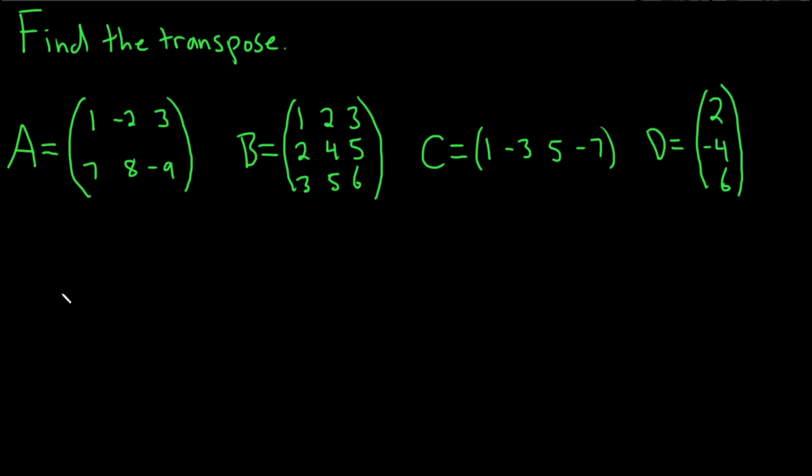So here we have A, now we're going to find the transpose, which I'll denote by A to the T. Basically, you just take each row and turn it into a column. So here we have the first row, 1, negative 2, 3. You turn that into a column: 1, negative 2, 3. Then you take the second row and turn that into a column: 7, 8, negative 9. That's it.